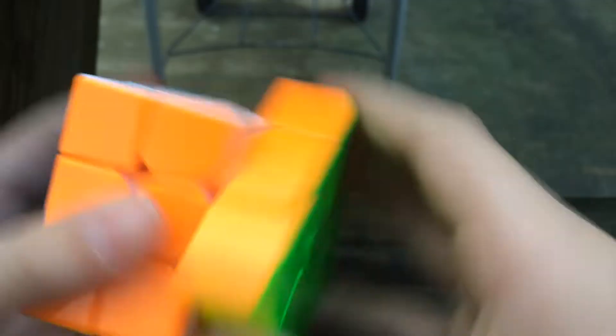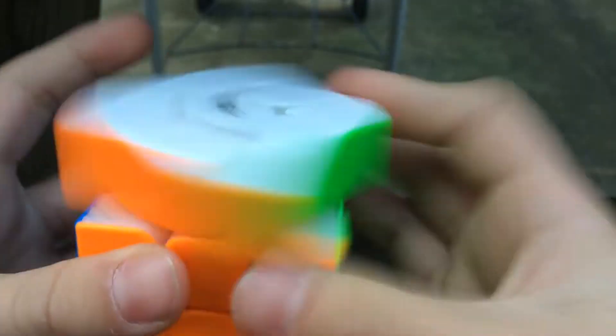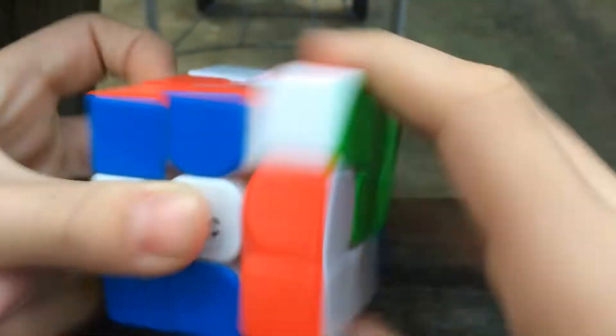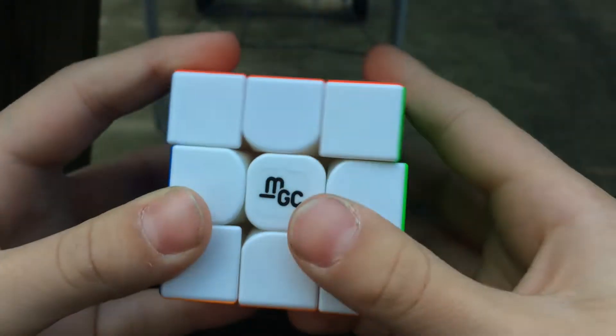I prefer another cube like a Gan or a Valk 4M, but it's certainly a little bit faster. So if you're looking at something that's a little faster and a little crunchier than the old MGC, then I really would recommend this. I feel like this cube fits people with a lighter turning style, because it's a nice feeling. So yeah, let's get on to my final thoughts.